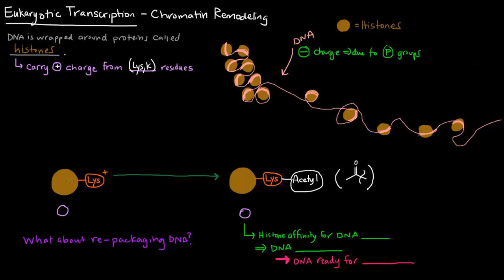So if we initially have a histone with some lysine residues on it, those have positive charges. If we can get rid of this positive charge, then maybe we'll be able to free up the DNA. And there's actually an enzyme that does that. It's called histone acetyltransferase, otherwise known as HAT. And what it does is it adds an acetyl group to that lysine, getting rid of that positive charge.